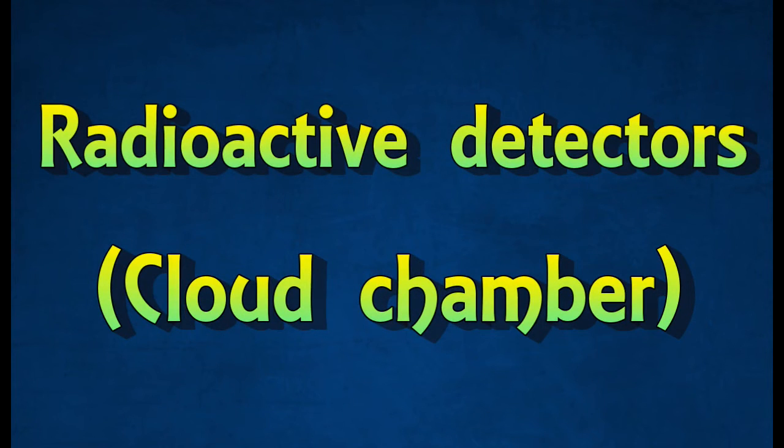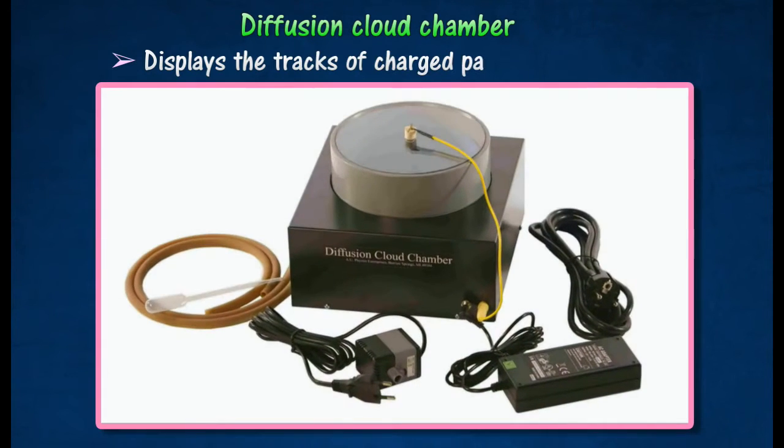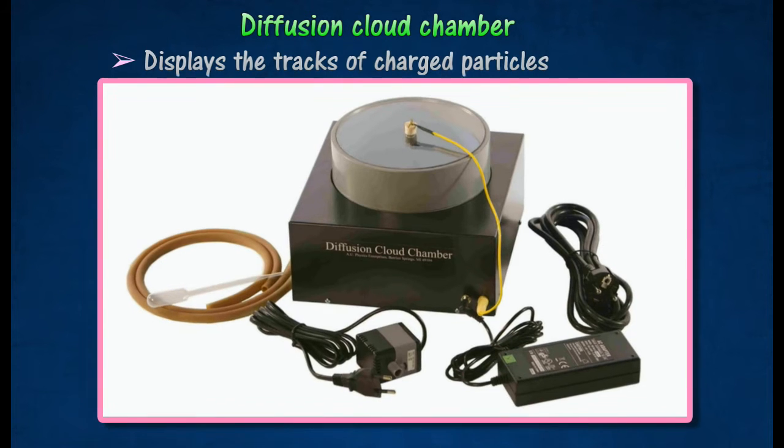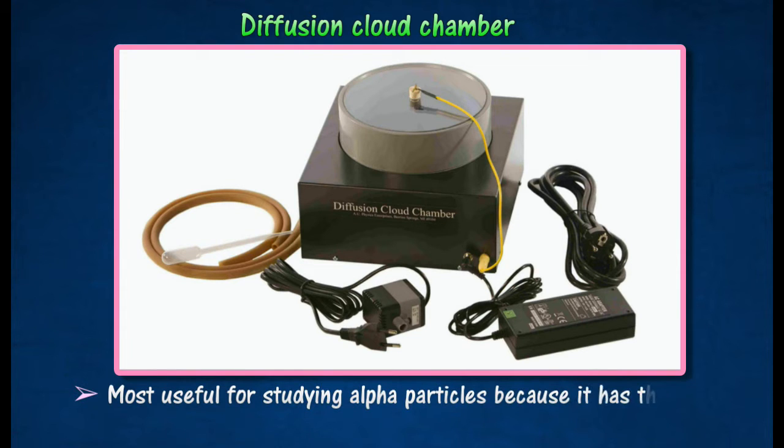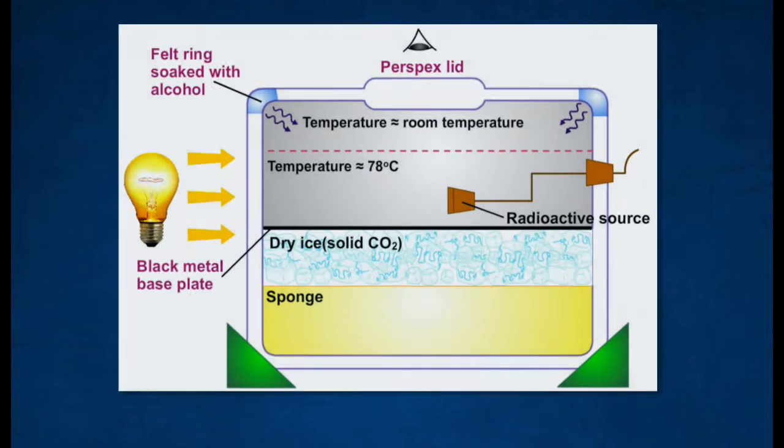Radioactive detectors: Cloud chamber. A cloud chamber enables the tracks of nuclear radiation to be seen. The cloud chamber is most useful for studying alpha particles because it has the strongest ionic effect. A felt ring inside the top of the chamber is soaked with alcohol.